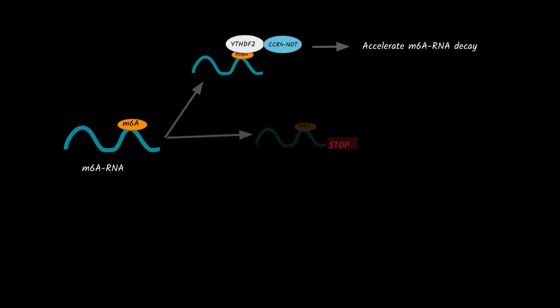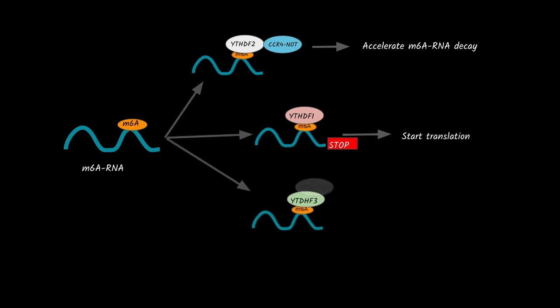The better known are the YTH family, within which we find YTHDF2, which binds M6A sites and accelerates the degradation of RNAs modified by recruiting CCR4-NOT. YTHDF1, this protein binds to M6A sites around the stop codon and cooperates with the translation initiation machinery. YTHDF3, it works like an adapter between the RNA and YTHDF1 and YTHDF2.